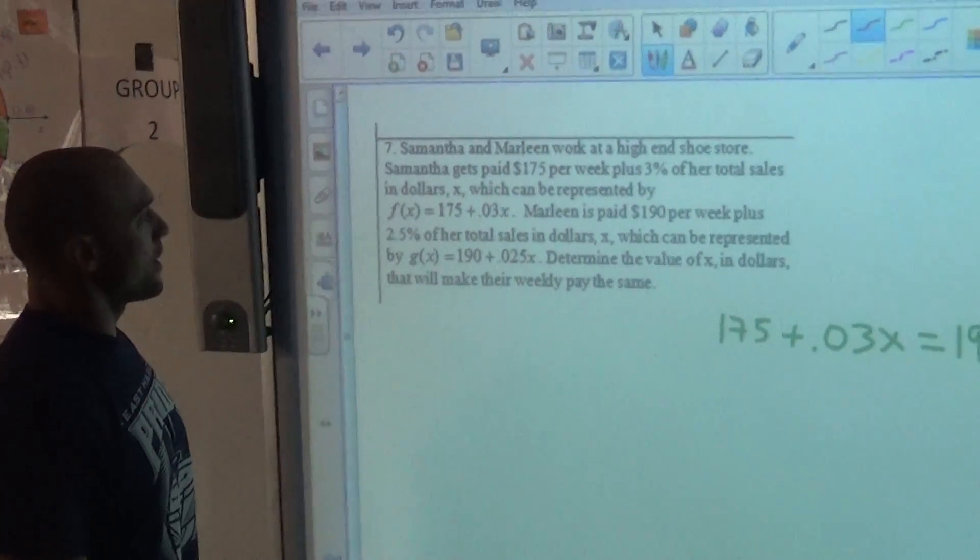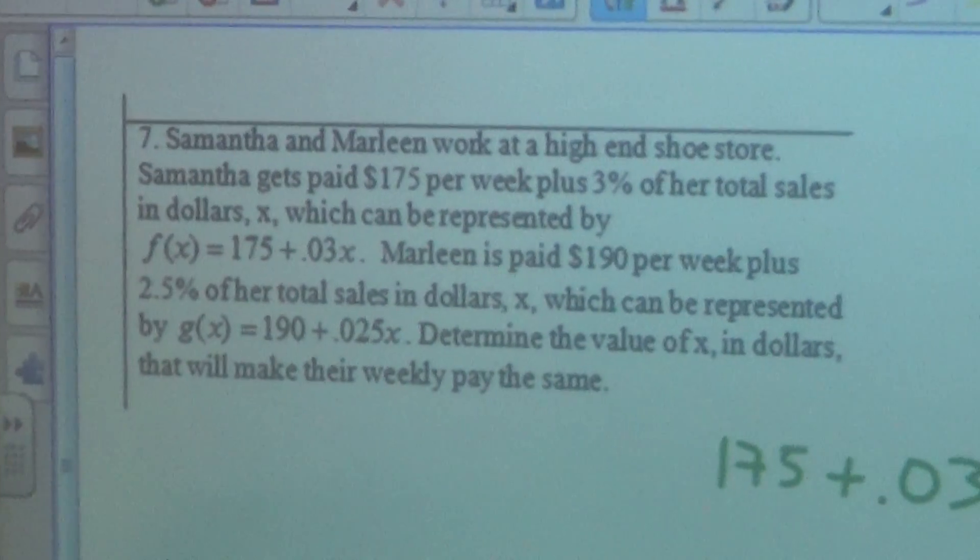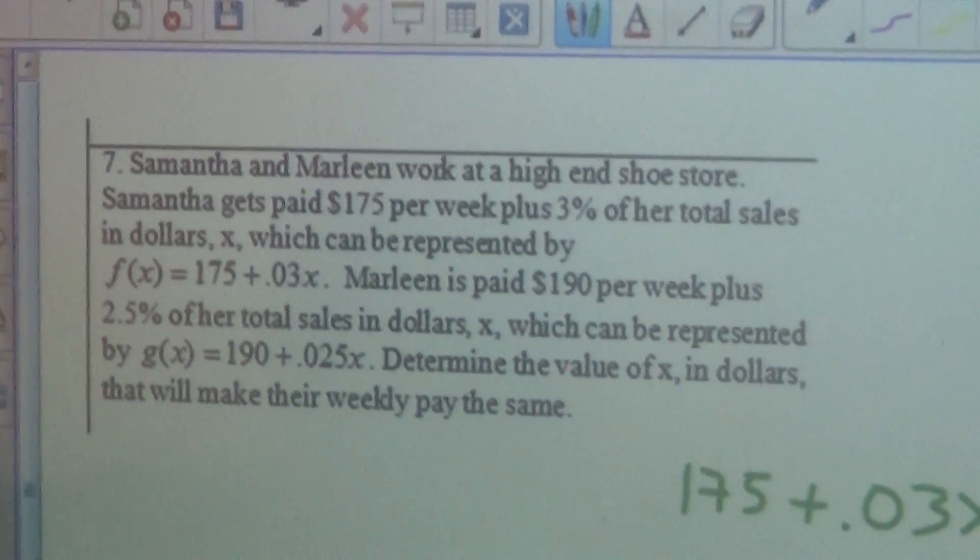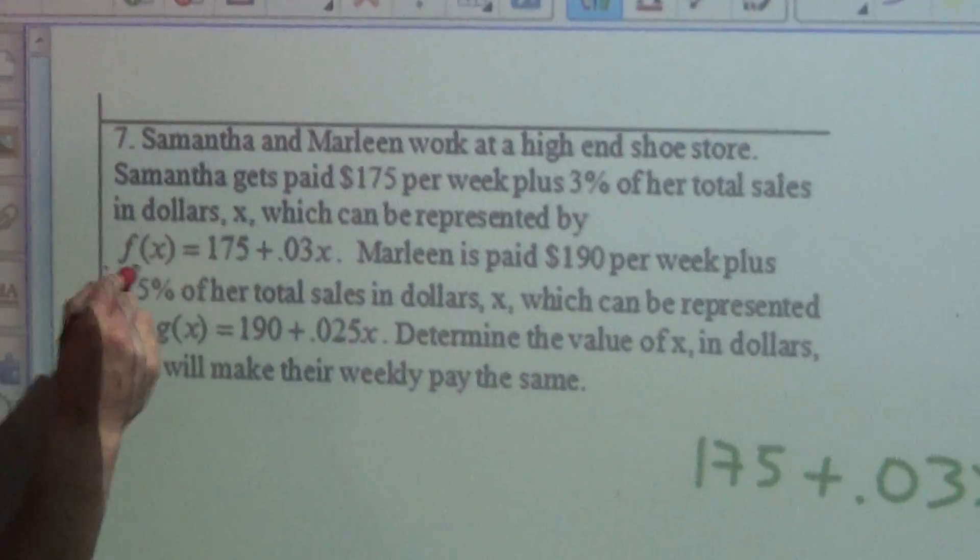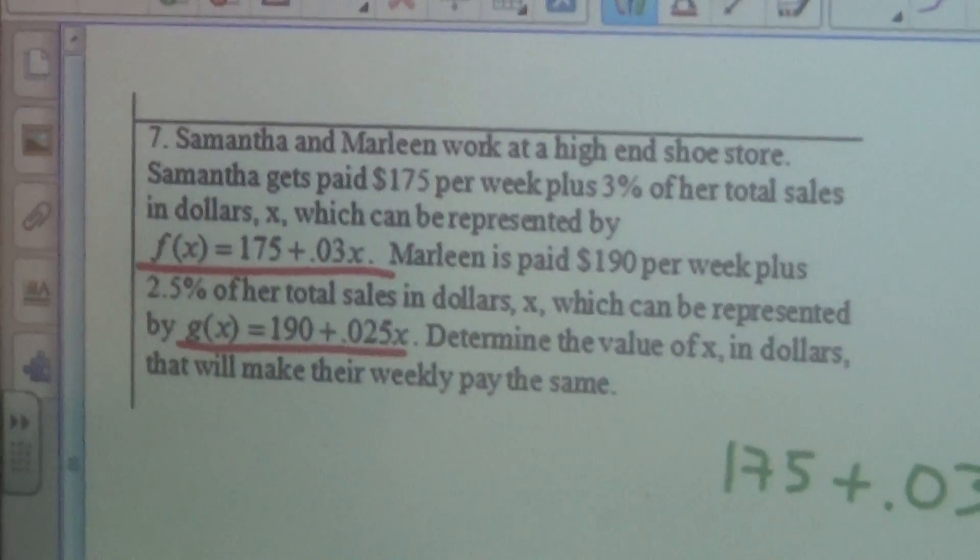Okay, here we have two people who work at a high-end shoe store, and each of these equations, these functions, models how much money they make. So we have f of x is for Samantha, and Marlene is g of x.